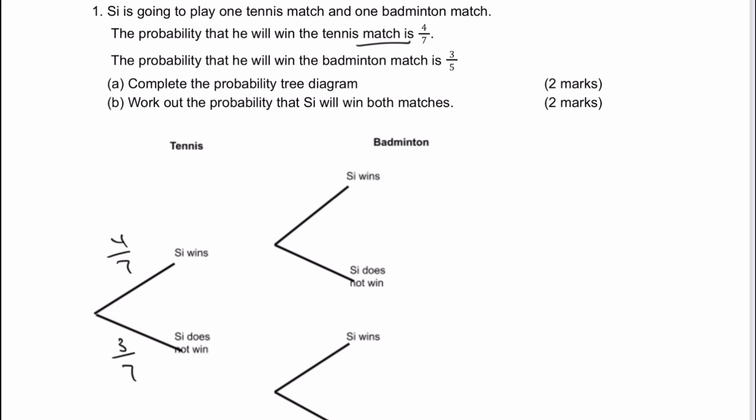And then we look at the badminton match, which is a separate thing altogether. And we say the probability that he'll win the badminton match is three out of five. So that's going to be three out of five and therefore two out of five that he won't win.